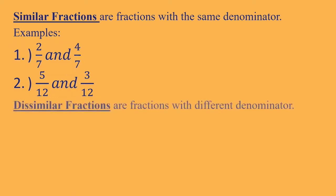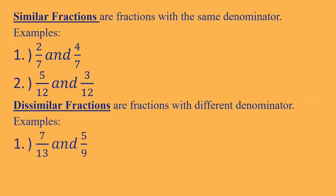Now, what are dissimilar fractions? These are fractions with different denominators, like 7 over 13 and 5 over 9. As you can see, 7 over 13 and 5 over 9 have different denominators — 13 and 9 are different, that's why they are dissimilar. Another example is 11 over 21 and 6 over 10. So 21 and 10 are different denominators, that's why they are called dissimilar fractions.